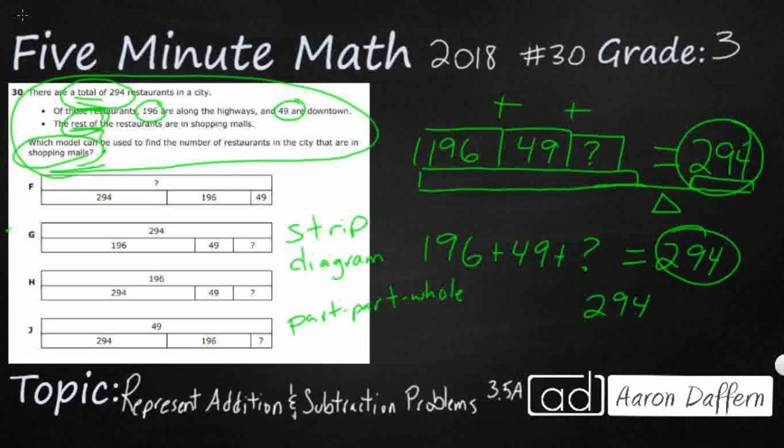That's how we do a strip diagram. So we're going to put this right here. So that represents everything. And then underneath it, we already know we've got three chunks. Sometimes they try to make them proportional, sometimes they don't. I'm not going to worry about it this time. I'm just going to say 196, 49, and then question mark.